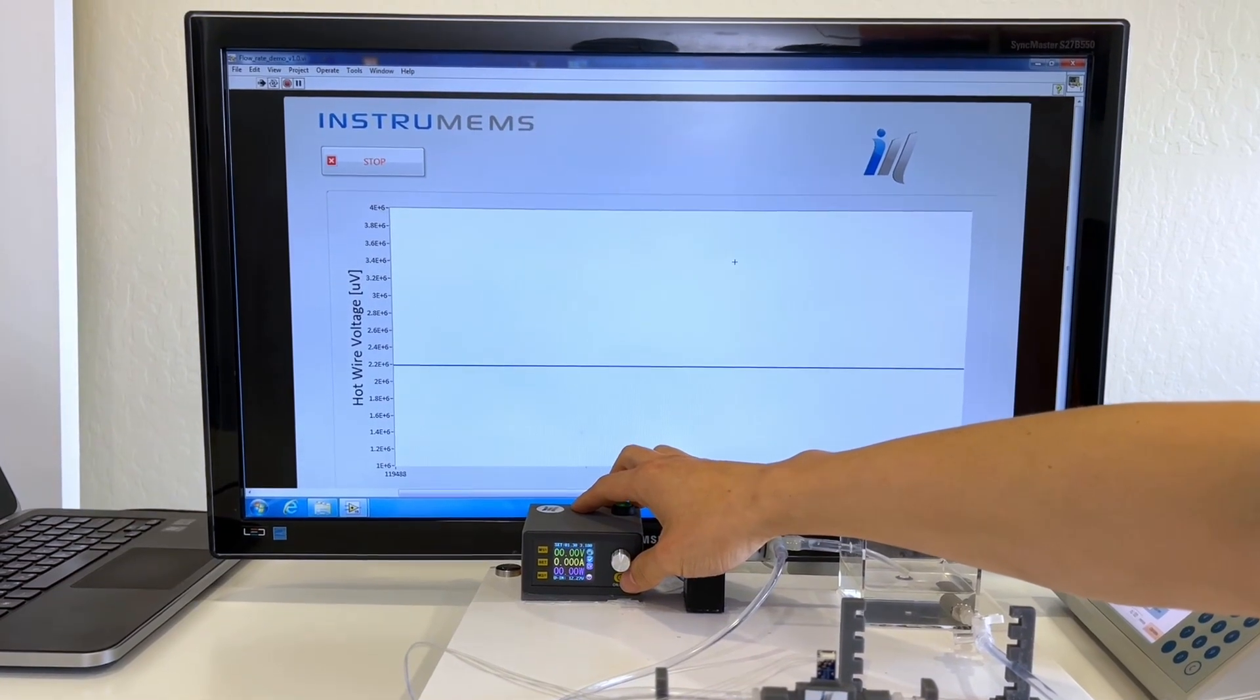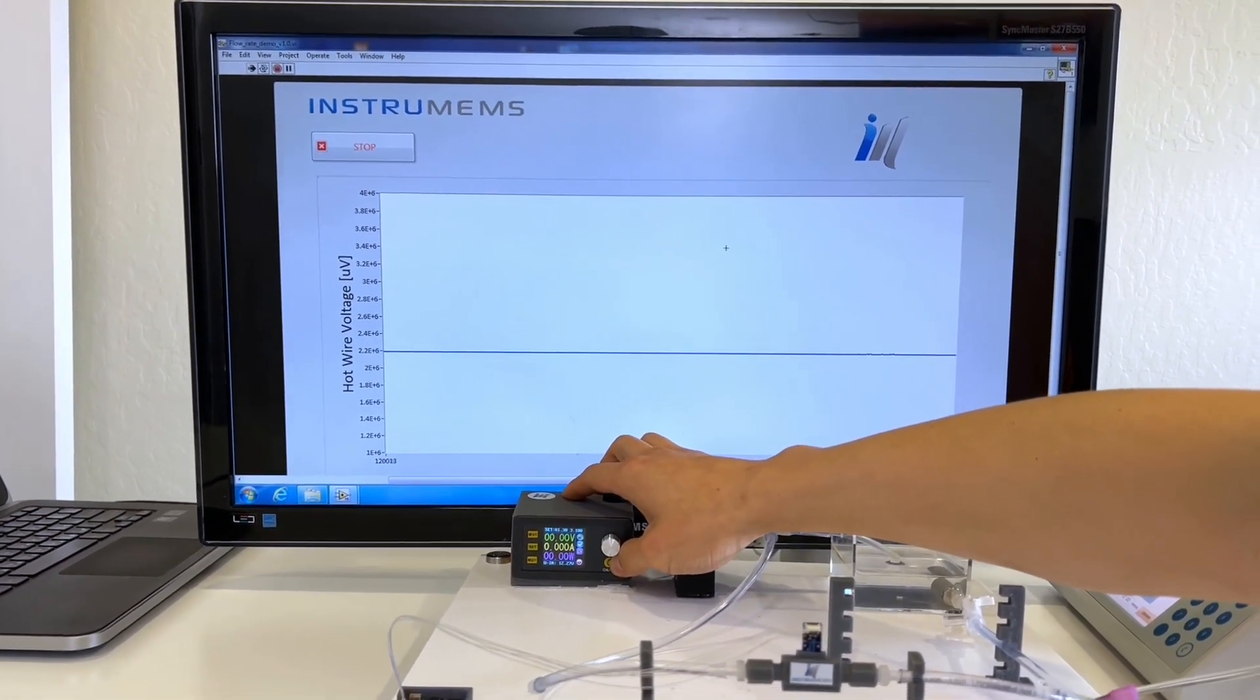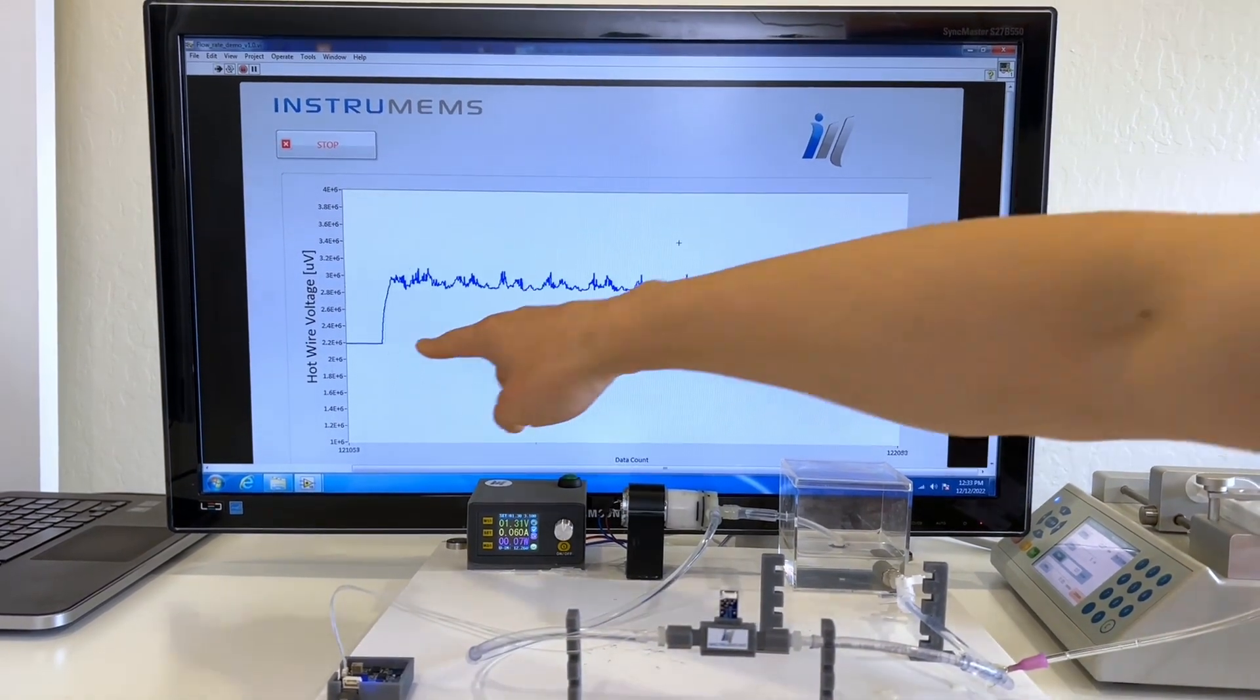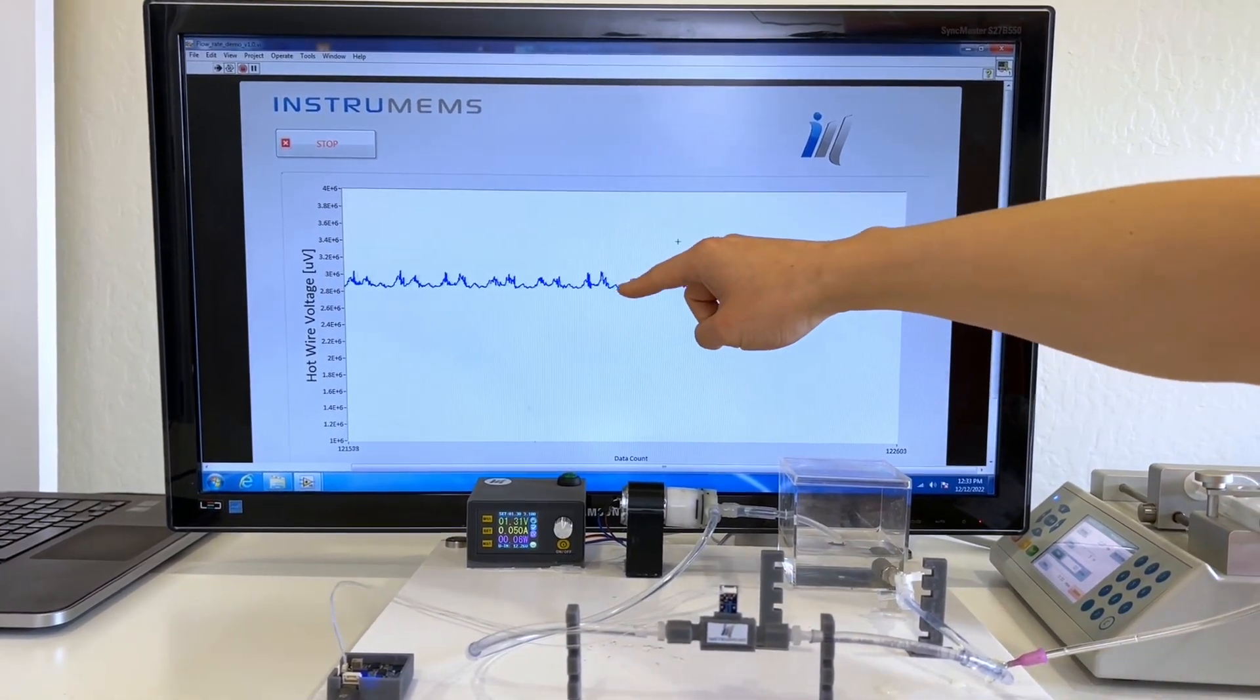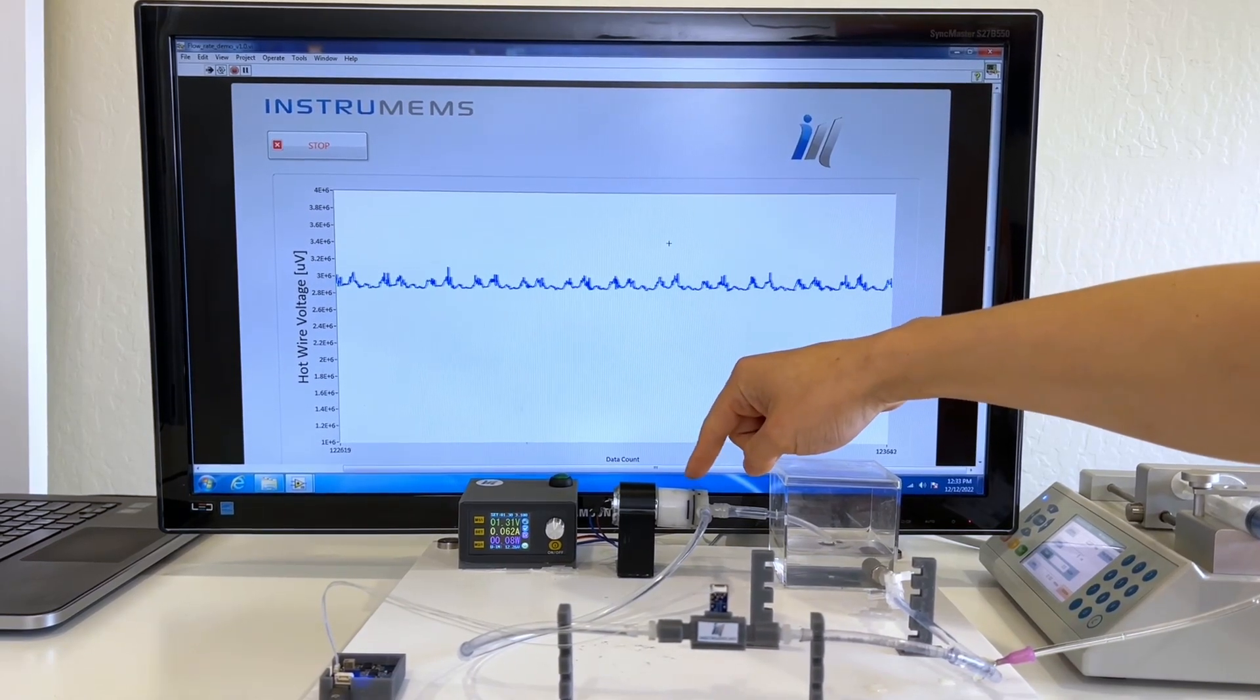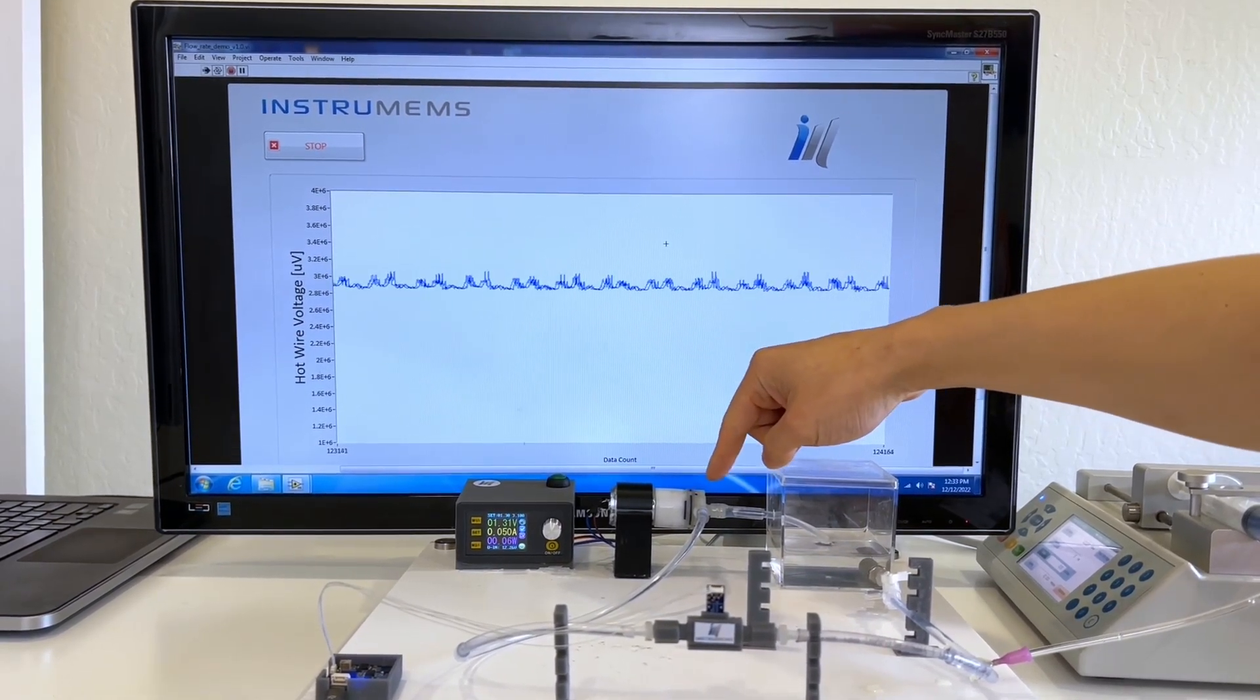Our first demo is the liquid flow measurement. Upon turning on the pump, the sensor's fast response time registers the flow instantaneously. The sensor also indicates the residual perturbations present in the flow generated by the pump.